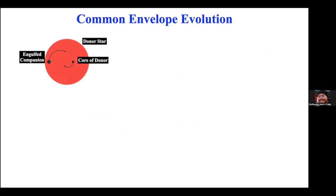To explain how this process works: you basically have a giant star — it could be a red giant or an asymptotic giant branch star — and it engulfs a companion in a binary system. They then inspiral together towards one another. There are many, many orbits before they inspiral so that they're very, very close together, but the process is still relatively rapid.